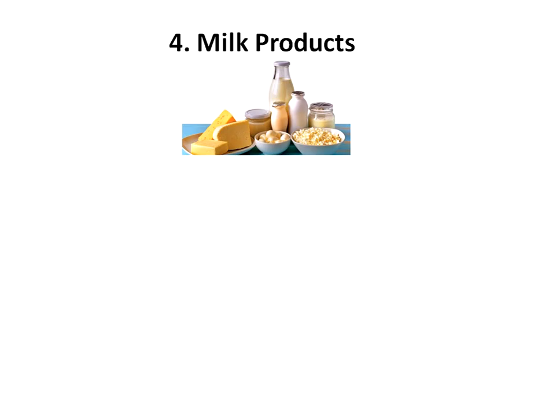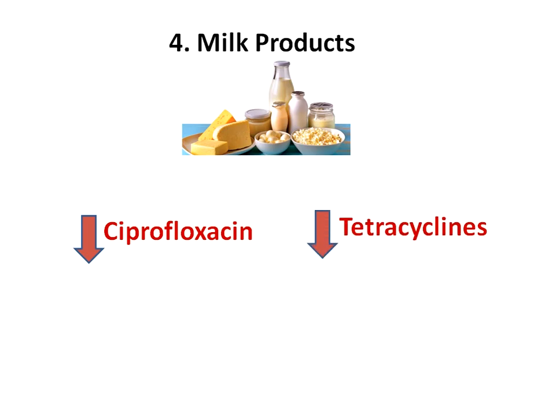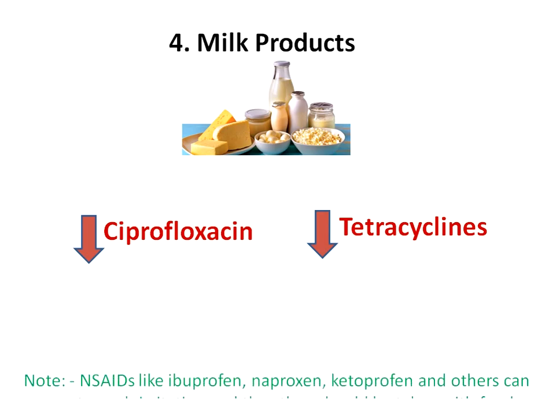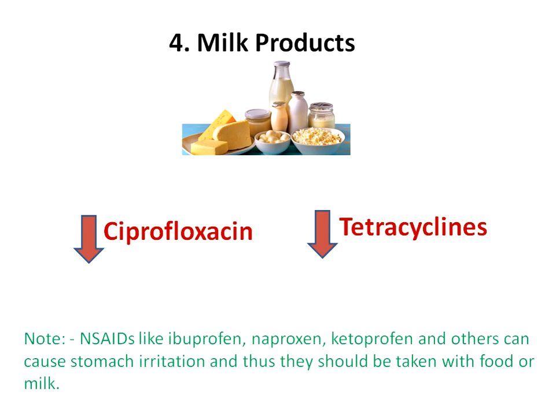Fourth, milk products. Casein and calcium present in milk decrease the absorption of ciprofloxacin and other fluoroquinolone antibiotics. Calcium and iron present in milk also decrease the absorption of tetracycline antibiotics by forming insoluble chelates. Conversely, NSAIDs like ibuprofen, naproxen, and ketoprofen can cause stomach irritation, and thus should be taken with food or milk.